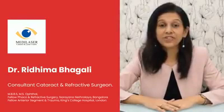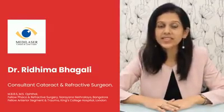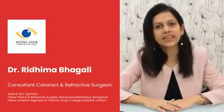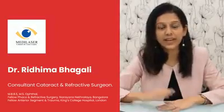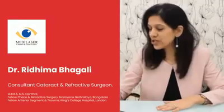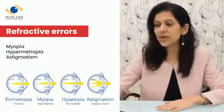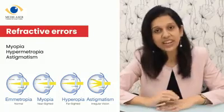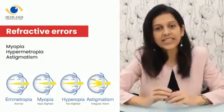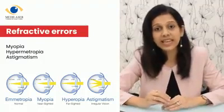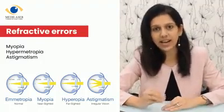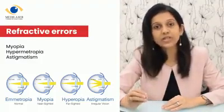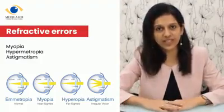Coming to refractive surgery — what is it? It's a procedure wherein we correct the refractive error of the eye. A refractive error is an abnormality in focusing light in the eye, an abnormality in forming an image on the retina of the eye.